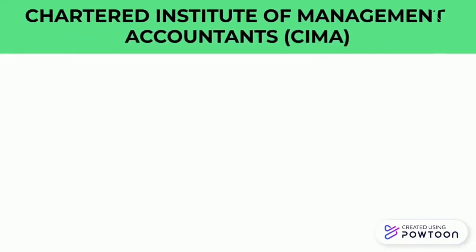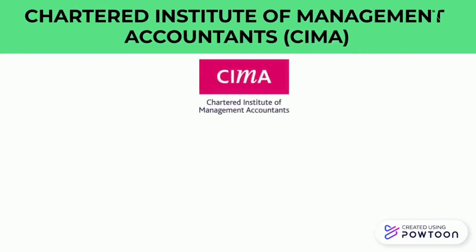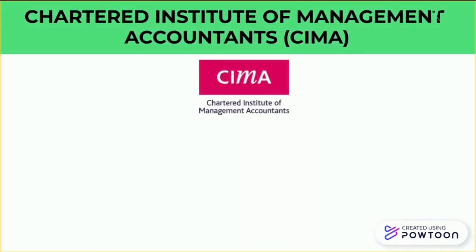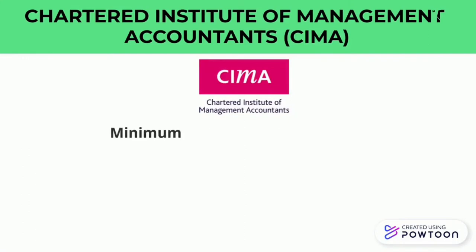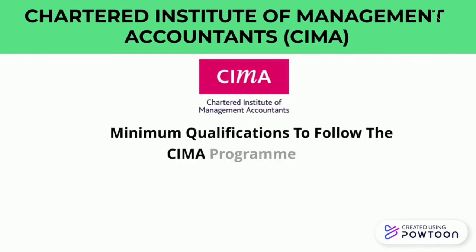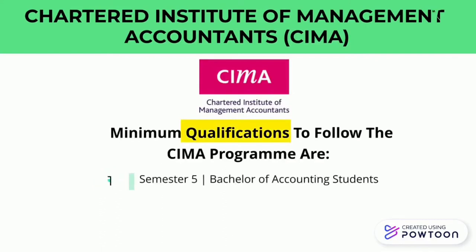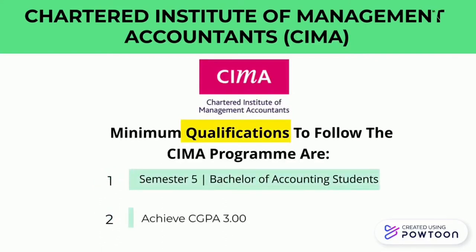The next paper is the Chartered Institute of Management Accountants, shortly known as CIMA. The minimum qualifications to take this paper are: you must be a semester 5 student studying the Bachelor of Accounting degree, and you must achieve a minimum GPA of 3.00.